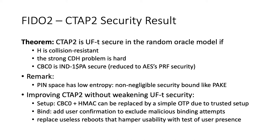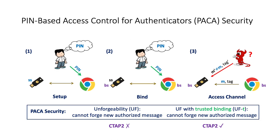We also propose several ways to improve the CTAP2 protocol without weakening its UFT security. For example, in the setup phase, because it's trusted, we don't really need the CBC and HMAC — a simple one-time pad would work. For the binding phase, we can add simple user confirmation, like pressing a button, to exclude all malicious binding attempts. Finally, CTAP2 also involves several useless reboots that hamper usability; we show these can be replaced by a simple test of user presence. Now we know that CTAP2 is secure in our UFT model, and it does not achieve UF security because of the unauthenticated Diffie-Hellman key exchange used in the binding phase.